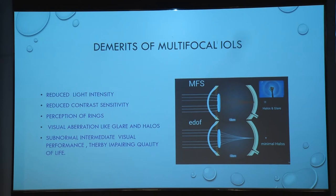What are the demerits of multifocal IOLs? There is reduced light intensity as light gets distributed between two foci, reduced contrast sensitivity, perception of rings, visual aberrations like glare and halos, and subnormal intermediate visual performance — thereby impairing quality of life.